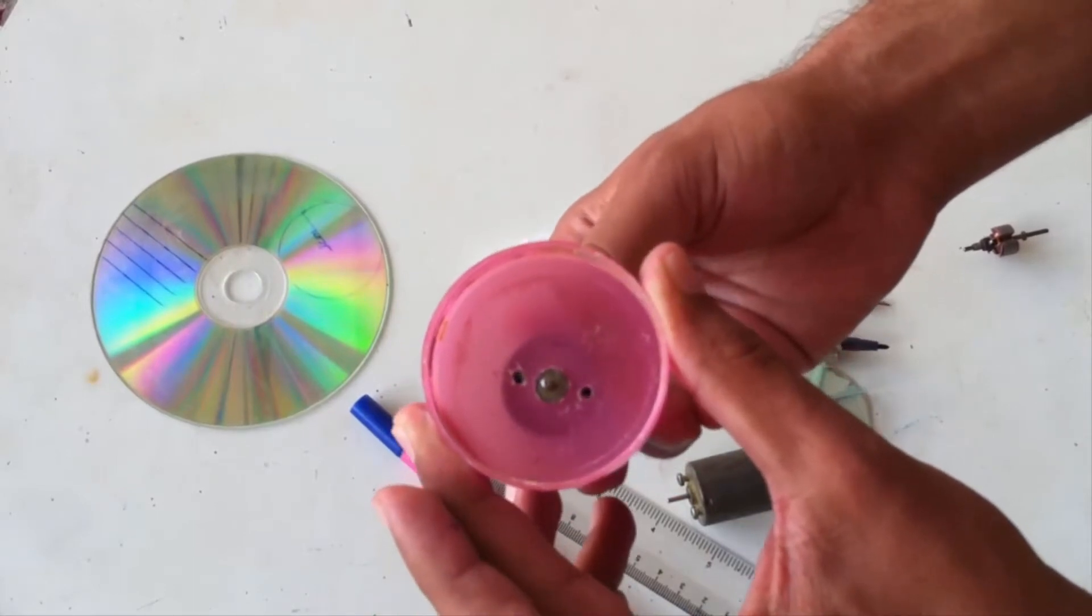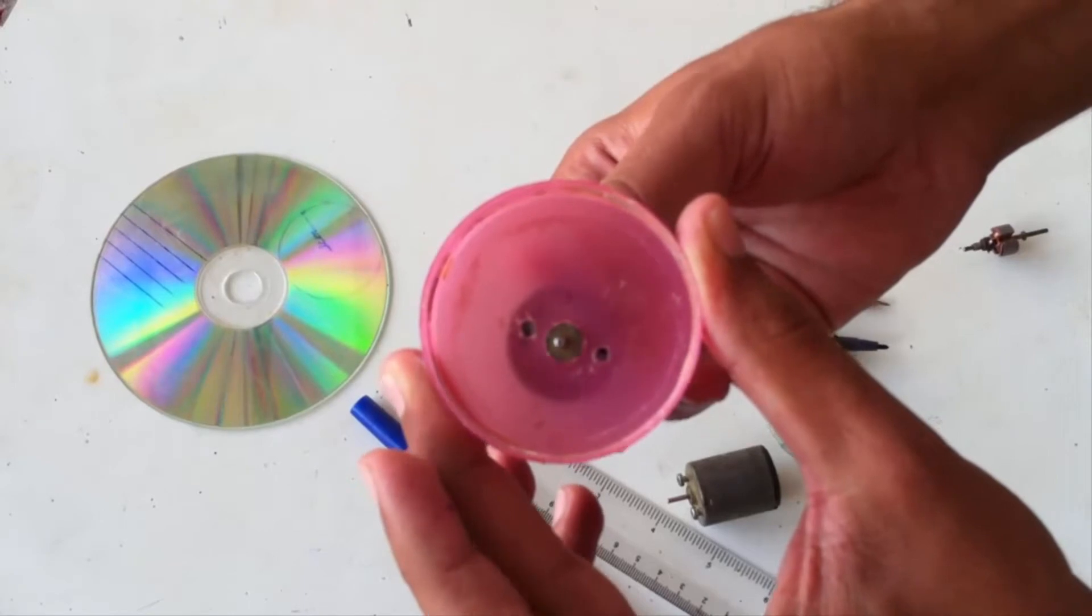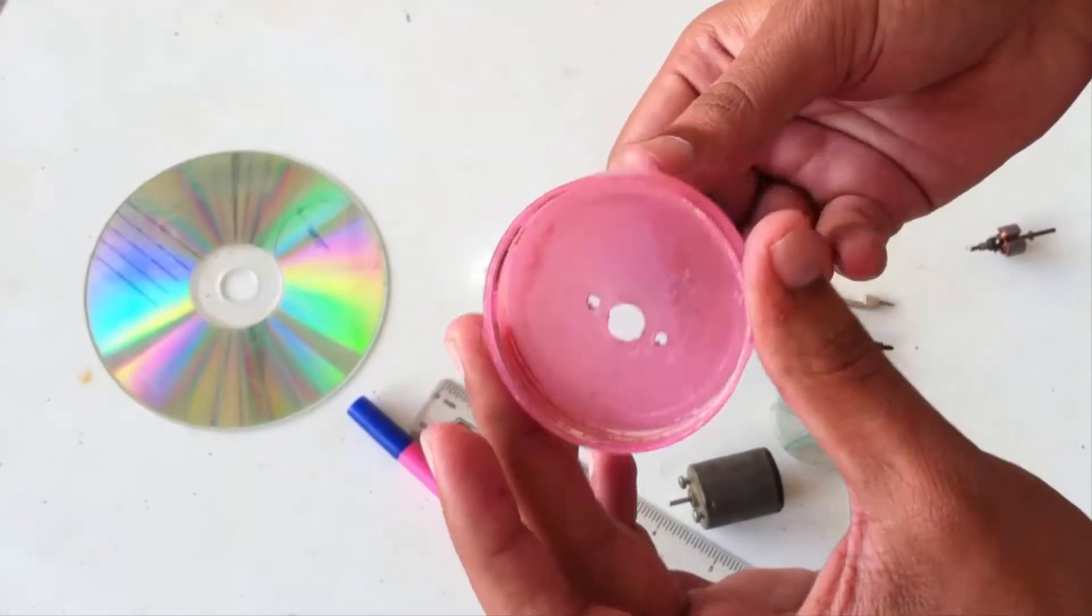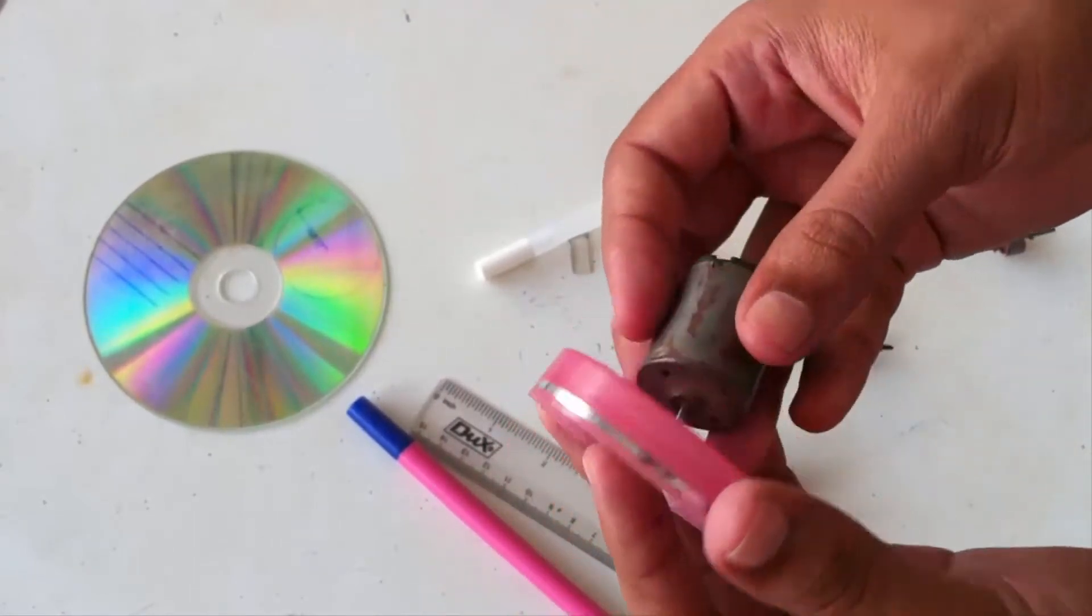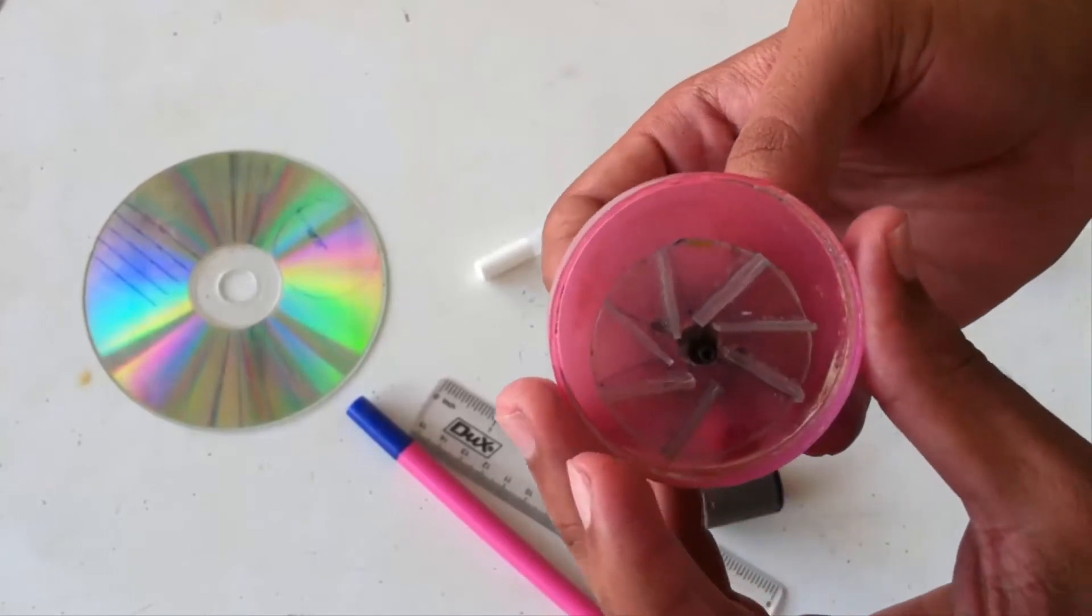So we can place the DC motor like this. Make sure this is tight enough so that there's no leakage of water. Now this fan will be placed something like this.